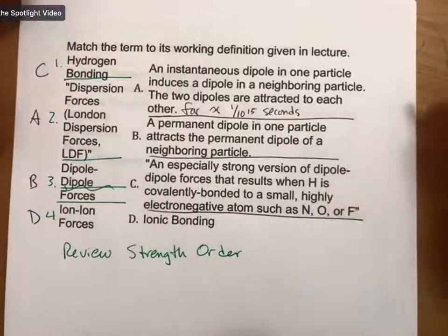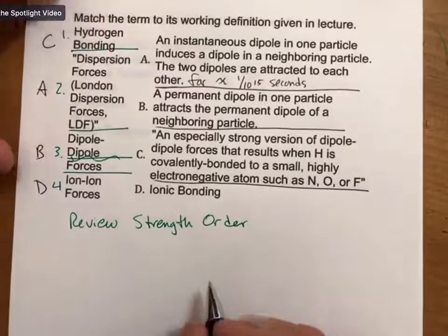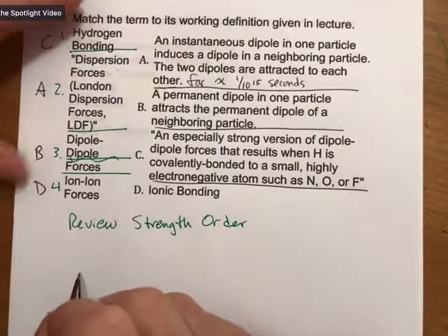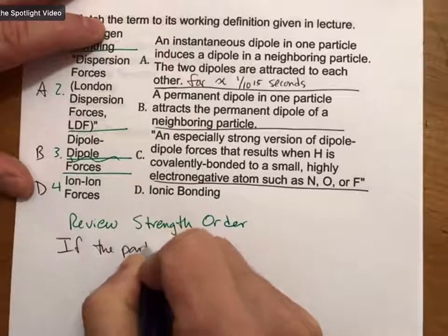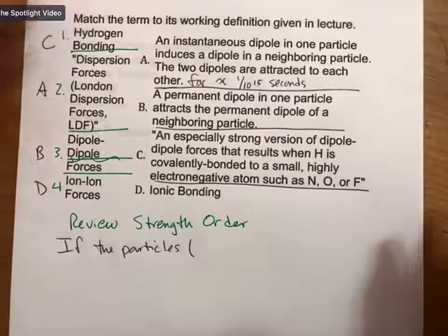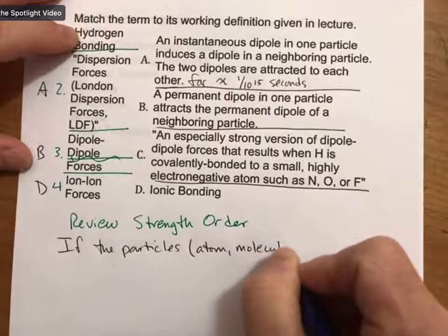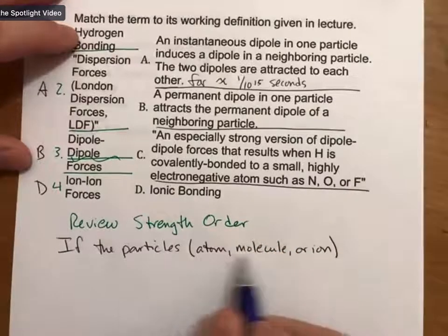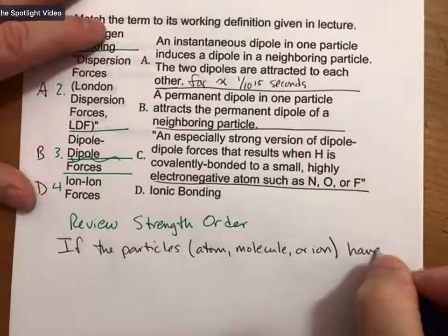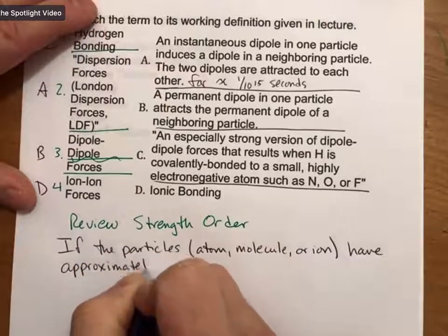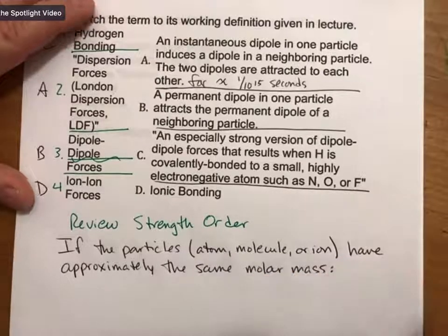In addition to discussing what they are, I wanted to review their strength order. I'll start by saying here that I'm going to be talking specifically if the particles, and by particles I mean could be an atom, could be a molecule, could be an ion, if the particles have approximately the same molar mass.